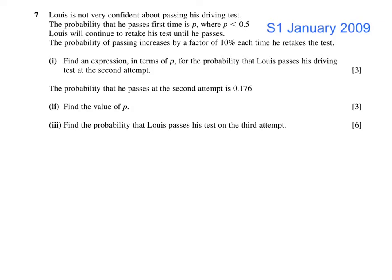Probability that Louis passes his driving test at the second attempt means that it is the probability that he didn't pass the first attempt multiplied by the probability he did pass at the second attempt. If I expand the brackets, that would be 1.1p minus 1.1p squared.